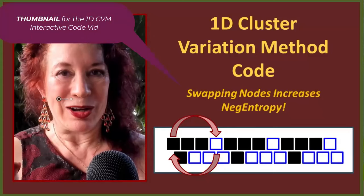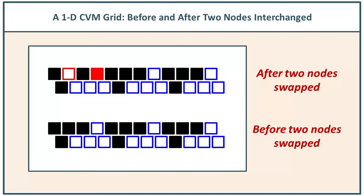This time you're just taking it one step further. Earlier in previous vids, we introduced interactive code for the one-dimensional cluster variation method. That specific piece of code let you do a swap of two nodes in a grid of nodes or neurons.